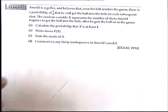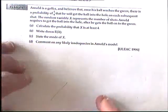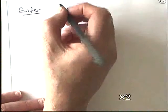Calculate the probability that X is at least 4 and some other things as well. So if we look at this golfing question, what's probably the first thing to write down then for this question? P equals a quarter.